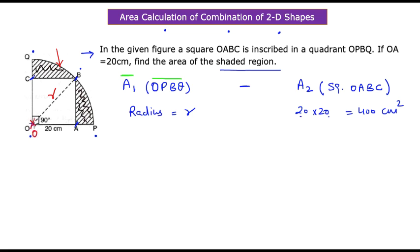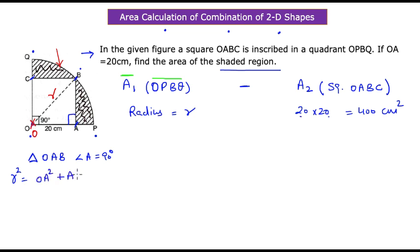OB is the radius, since O is the center and B is on the boundary of the circle. We don't have r directly, but there is a triangle OAB where angle A = 90°. Applying the Pythagorean theorem: r² = OA² + AB² = 20² + 20² = 400 + 400 = 800. So r² = 800.